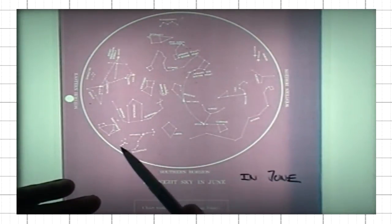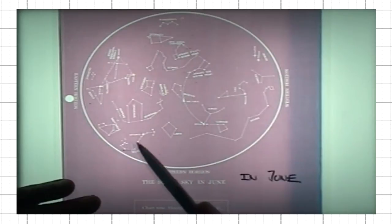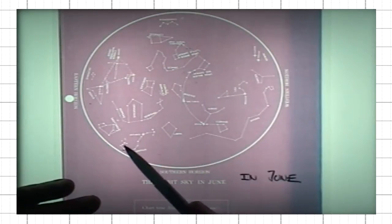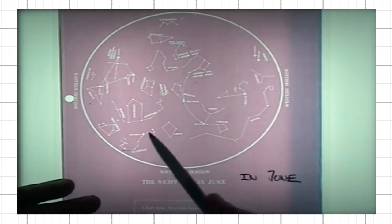What we see now is the full Scorpius. We see its tail with a sting, so the entire constellation of Scorpius is visible.